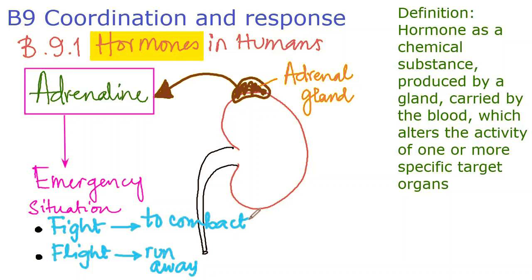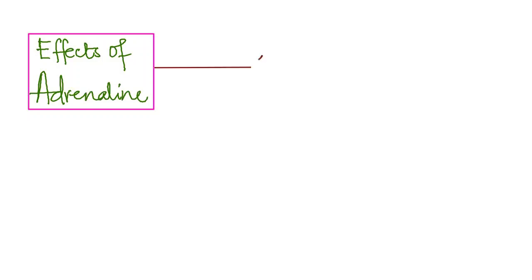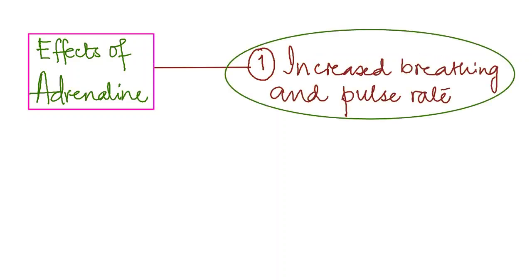Now we will focus on the effects of adrenaline on the human body. The first role is increased breathing rate and pulse rate. Increased breathing rate supplies more oxygen to the muscles and other cells, preparing the person for emergency situations such as fear, extreme happiness, sadness, danger, or excitement.